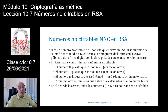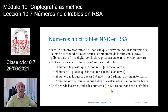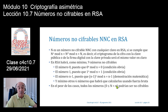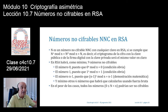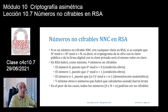Sí, vamos a ver que hay un caso en donde si no elegimos de forma adecuada la clave pública dentro de los primos P y Q, dentro del módulo de cifras, va a suceder que todos los números que uno cifre —el 0, el 1, el 2, el 3 y el 4, hasta N menos 1— todos podrían ir en claro. Hay que evitar darse una clave pública que cumpla con esas características, pero afortunadamente para claves reales no va a suceder.